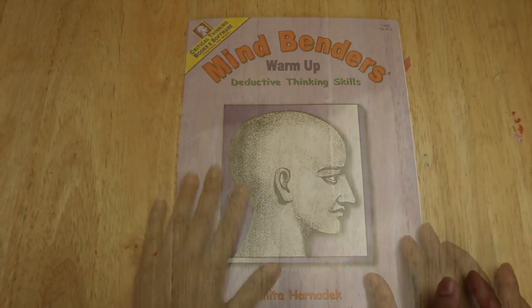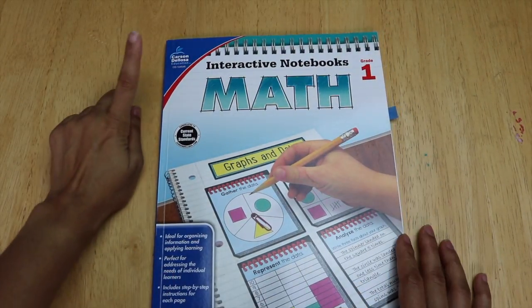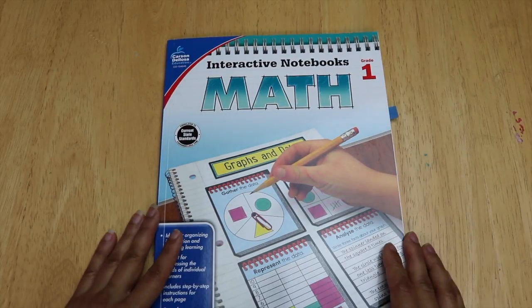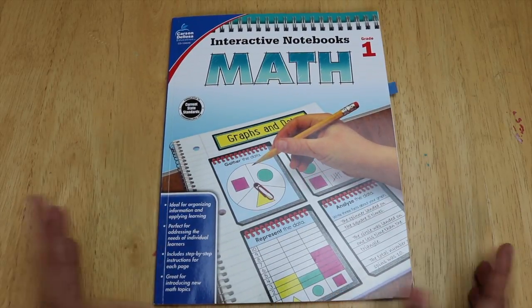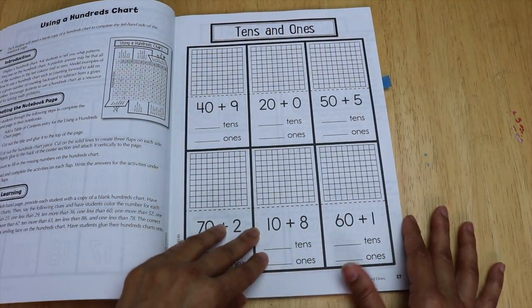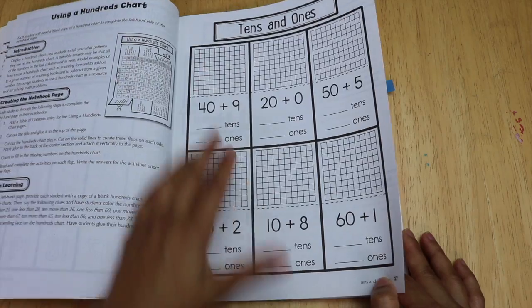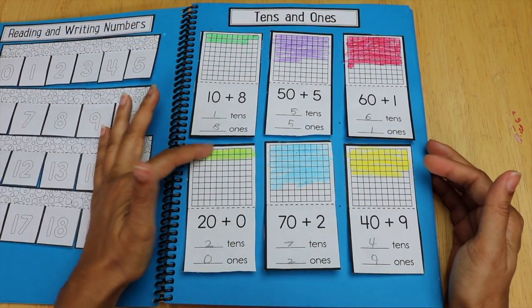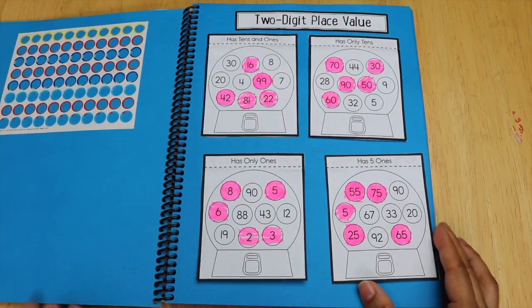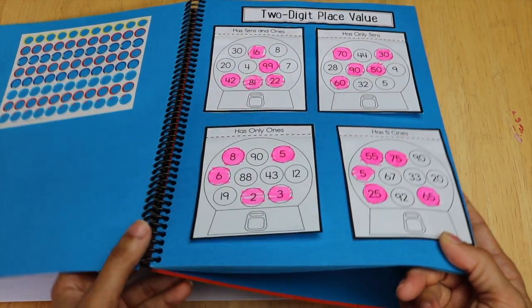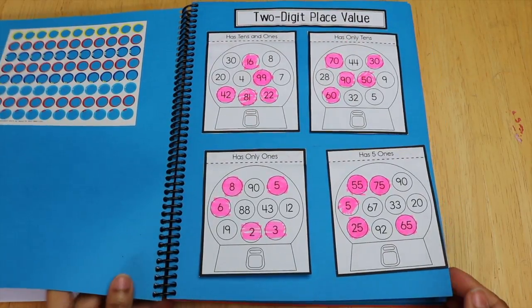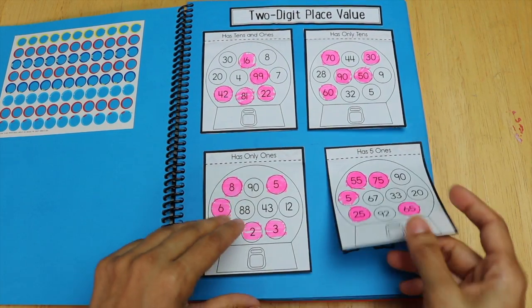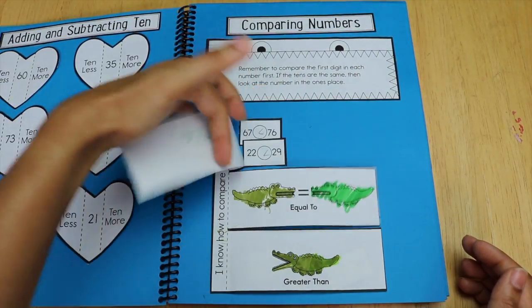Another book that we use is by Carson DeLosa, the interactive math notebooks for grade one. I'm on the fence about interactive notebooks. Sometimes he really enjoys cutting and pasting. Sometimes I think it's a waste of time. I generally will make a copy of the page so that I can save it for my other children and then we'll paste it into his math interactive notebook. So then we take the photocopies, cut them out, and then make our own interactive notebook here. I made these interactive notebooks just by buying card stock and then having them bound just to make it a little bit more sturdy.